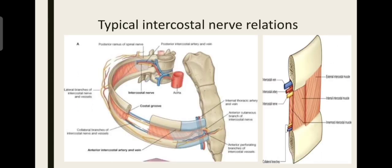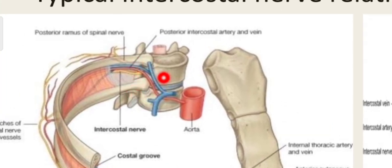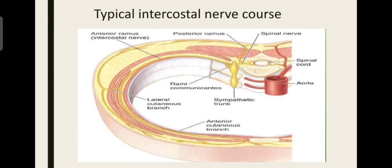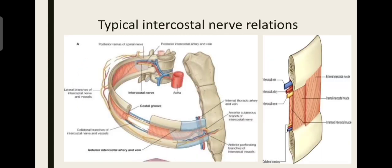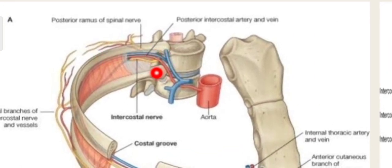Let us see the relations in detail. The intercostal nerve gets its origin from the intervertebral foramen — the foramen placed between the two vertebral bones. After origin, it passes laterally. There is a sympathetic trunk here, so it crosses the sympathetic trunk posteriorly, then courses laterally to go to the costal groove. There is the posterior intercostal membrane; by piercing it, the nerve enters into the intercostal groove. While piercing, it enters the costal groove.